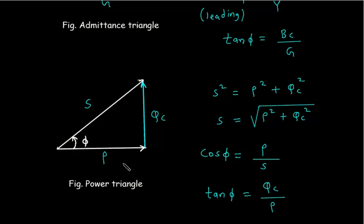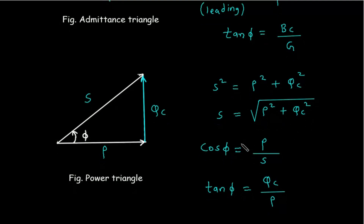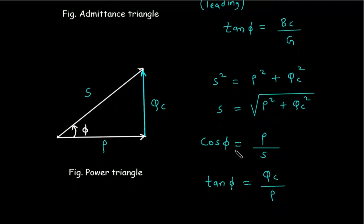Now for the power triangle: the hypotenuse is apparent power S, the adjacent side is true power P, and the opposite side is reactive power QC because of the capacitor. Using Pythagoras theorem, S squared equals P squared plus QC squared, so S equals the square root of P squared plus QC squared. Cos phi equals adjacent side divided by hypotenuse, so cos phi equals P by S, and tan phi equals QC divided by adjacent side P.